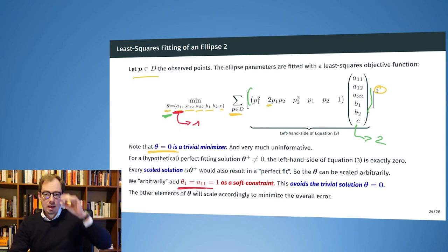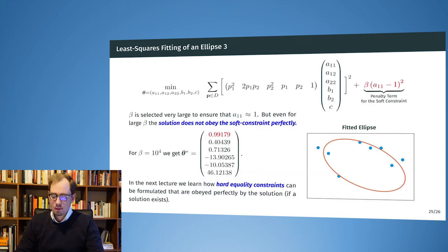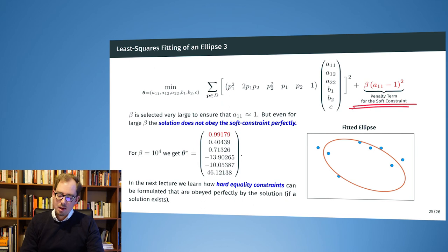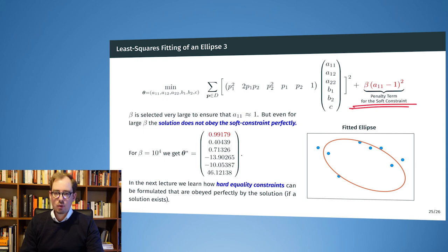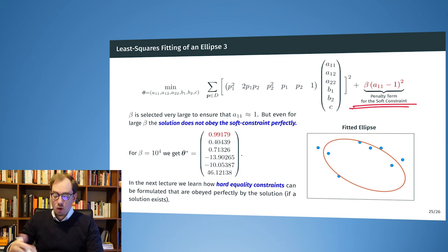Because we can only express soft constraints and have no hard precise constraints yet, we add a penalty term: beta times (A11 minus 1) squared. This term expresses our wish for A11 to equal one, and we can scale beta up to get closer and closer to solutions where this constraint holds to some precision.